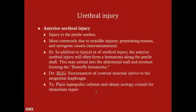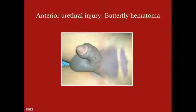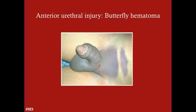Treatment for anterior urethral injury is similar to posterior, except bladder injury is not suspected here, so just place the suprapubic catheter and get a urology consult. If the hematoma breaks through Buck's fascia it can extend into the abdominal wall and down into the scrotum, giving what's called a butterfly hematoma.